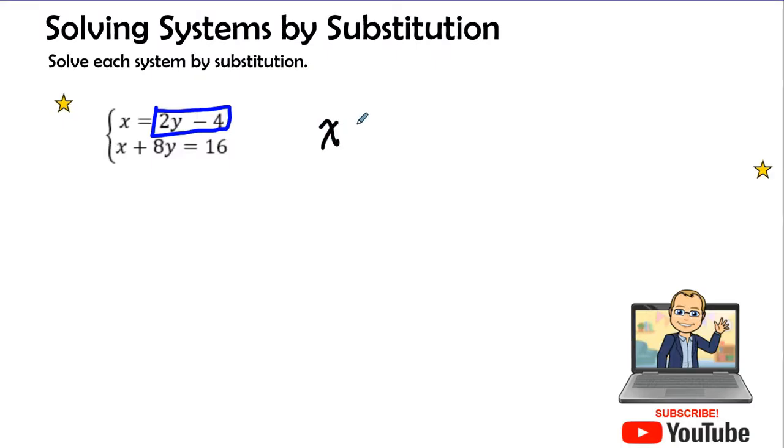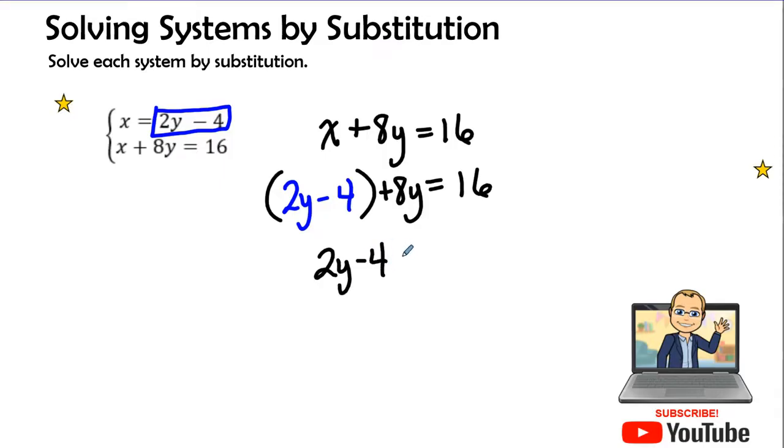So let's go ahead and plug it in. So we're going to write our equation x plus 8y equals 16. Wherever I see an x, I'm going to open up with parentheses where I'm going to plug in that expression and then copy everything else down. So let's put in that expression of 2y minus 4. Here we go. Let's get rid of the parentheses.